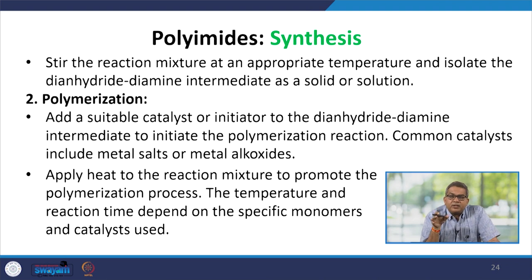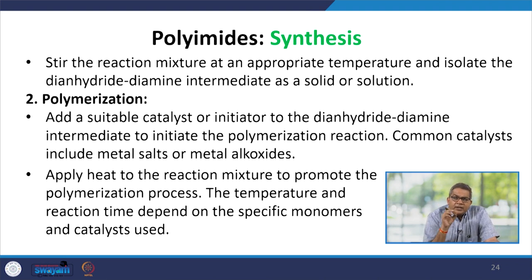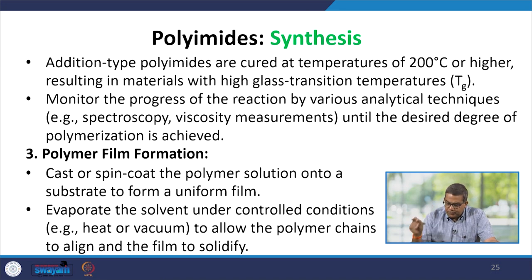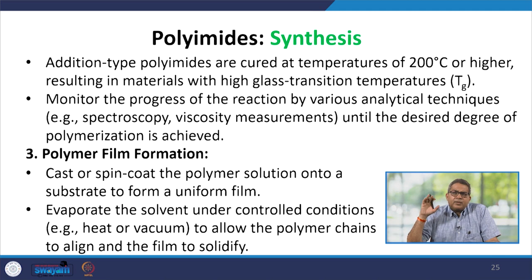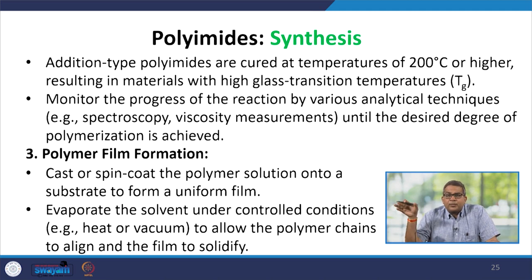Next, a suitable catalyst or initiator — such as metal salts or metal alkoxides — is added to initiate the polymerization reaction. The reaction mixture is heated to promote polymerization, with temperature and time depending on the specific monomer and catalyst used. Addition-type polyimides are then cured at around 200°C or higher, resulting in a material with a high glass transition temperature. Progress of the reaction is monitored by analytical techniques such as spectrophotometry and viscosity measurements until the desired degree of polymerization is achieved.